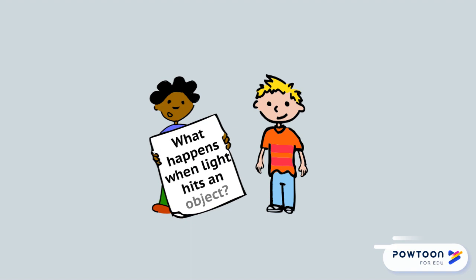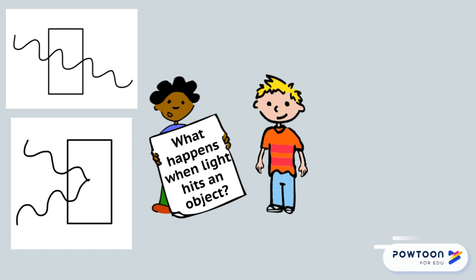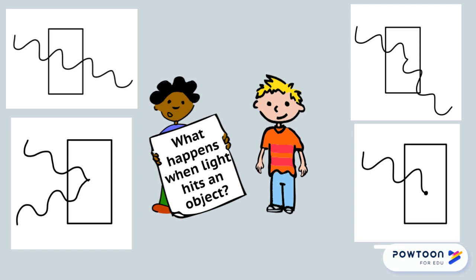When light hits an object, one of four things can happen. It can pass straight through, it can bounce back at the same angle it came in, it can bounce back at a new angle, or the object can take it in like a sponge. Let's go through each one.